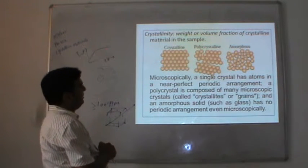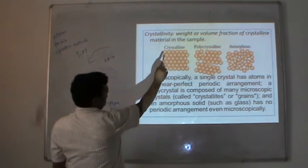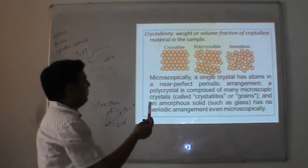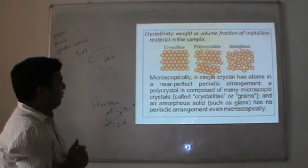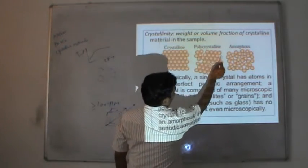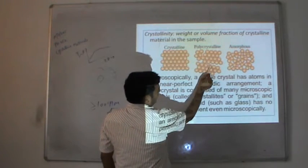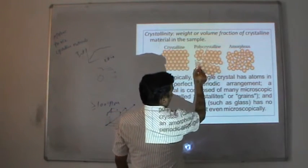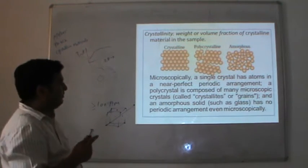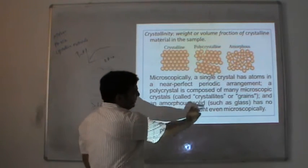Microscopically, a single crystal has a near-perfect periodic arrangement where everything is repeated after a fixed angular or distance interval. A polycrystal is composed of many microscopic crystals — these are the crystalline regions, known as crystallites or grains. An amorphous solid such as glass has no periodic arrangement even microscopically.